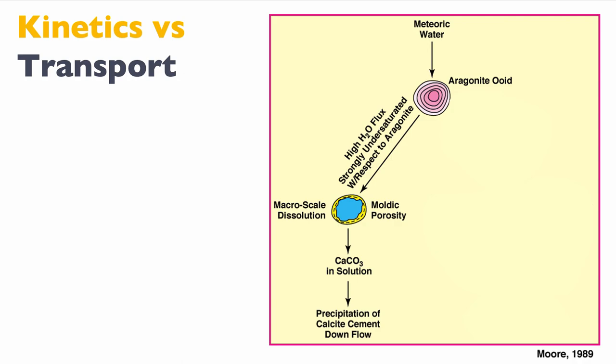At the site of dissolution, we create enhanced porosity. Of course, everything is a mass balance. Further down — maybe a few hundreds of meters, or a few kilometers or tens of kilometers depending on the system — we'll have precipitation of a calcite mineral. The cement will reduce porosity further down the flow, but at the site of dissolution, we improve the porosity and probably the permeability as well.